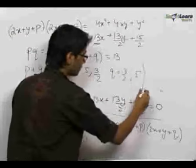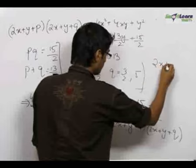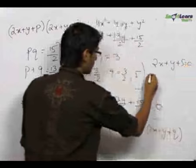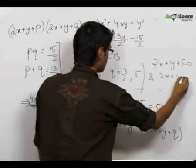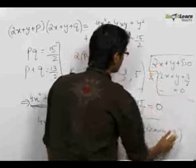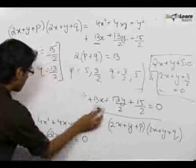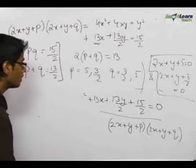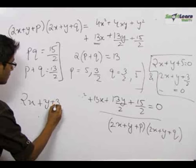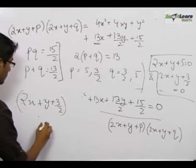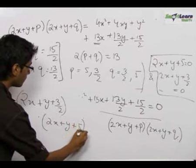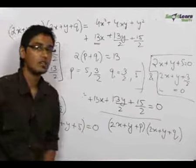So our two lines are 2x + y + 5 = 0 and 2x + y + 3/2 = 0. This pair represents the two parallel lines given by the original equation. That is our final answer.